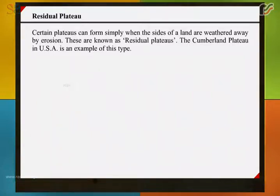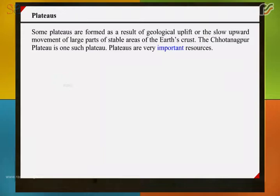Residual plateaus form simply when the sides of land are weathered away by erosion. The Cumberland plateau in the USA is an example of this type. Some plateaus are formed as a result of geological uplift, or the slow upward movement of large parts of stable areas of the earth's crust. The Chotanagpur Plateau is one such plateau.